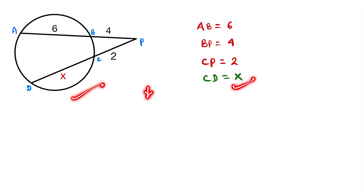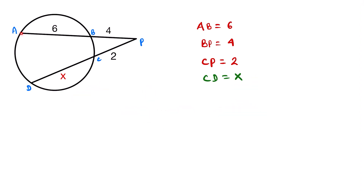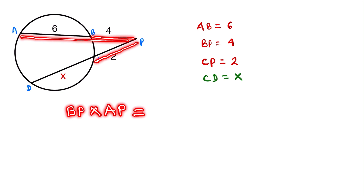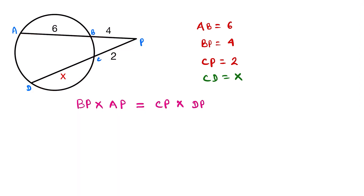For finding the value of x, we use a circle theorem. The theorem states: when a line meets the outside of a circle at a point P, then the multiplication of the total length on one side — BP into AP — is equal to CP into DP. We use this theorem to solve the problem.